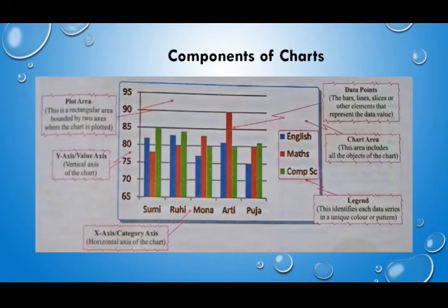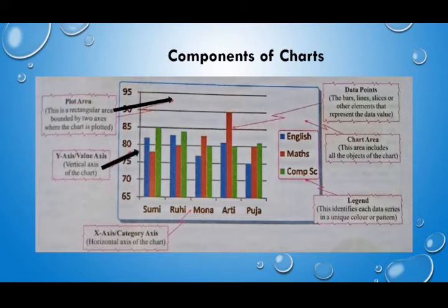Let us see what are the components of a chart. The first one is the plot area — it is an area where the data in our chart is plotted. It is bounded by two axes: the first one is the value axis, or Y-axis, or vertical axis, and the next one is the X-axis, category axis, or horizontal axis. If you want to draw a graph, you already know two values are needed — one is the X-axis value and another one is the Y-axis value.